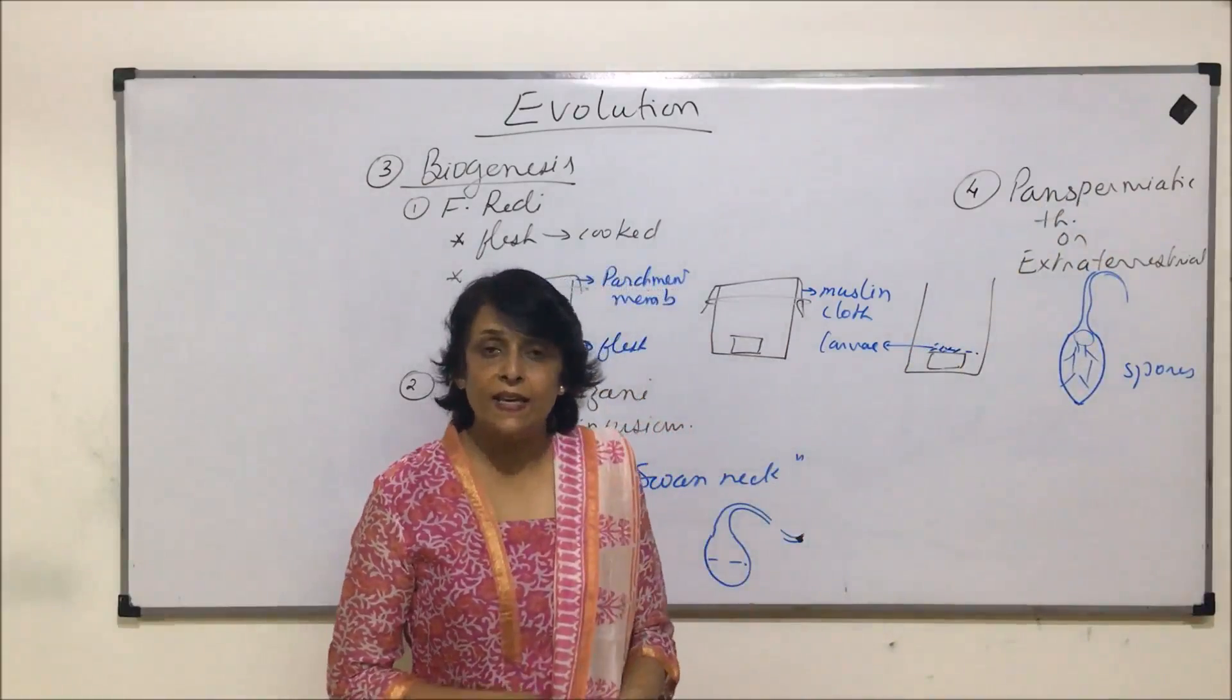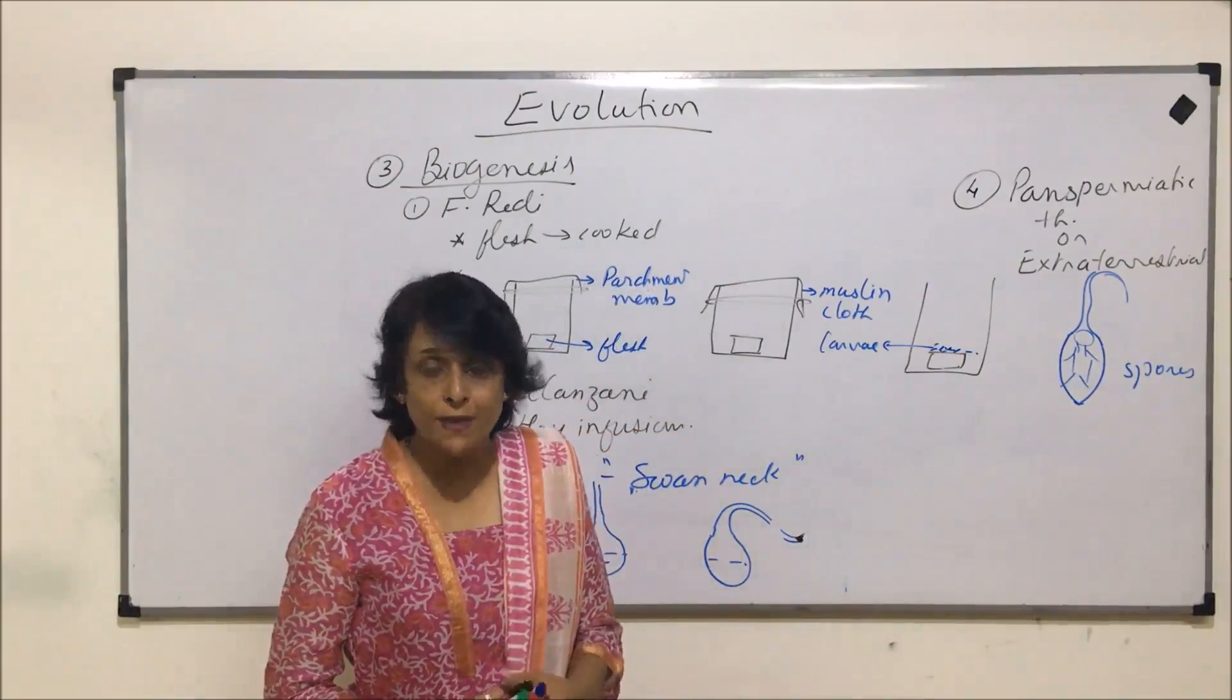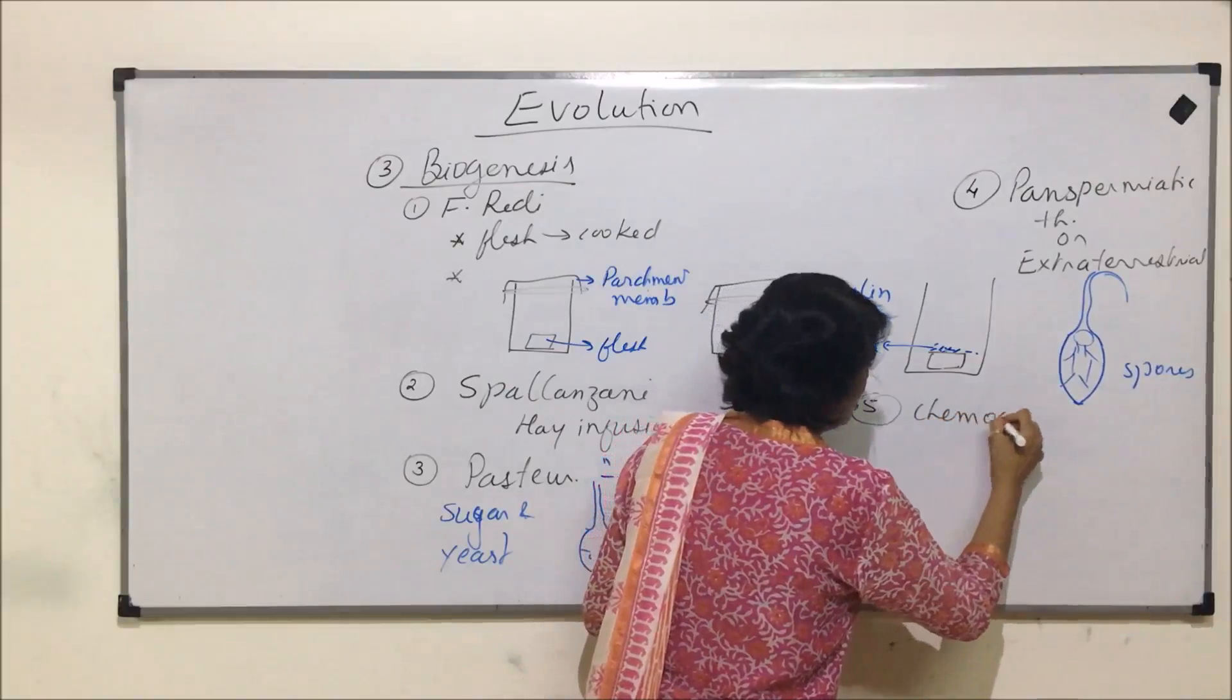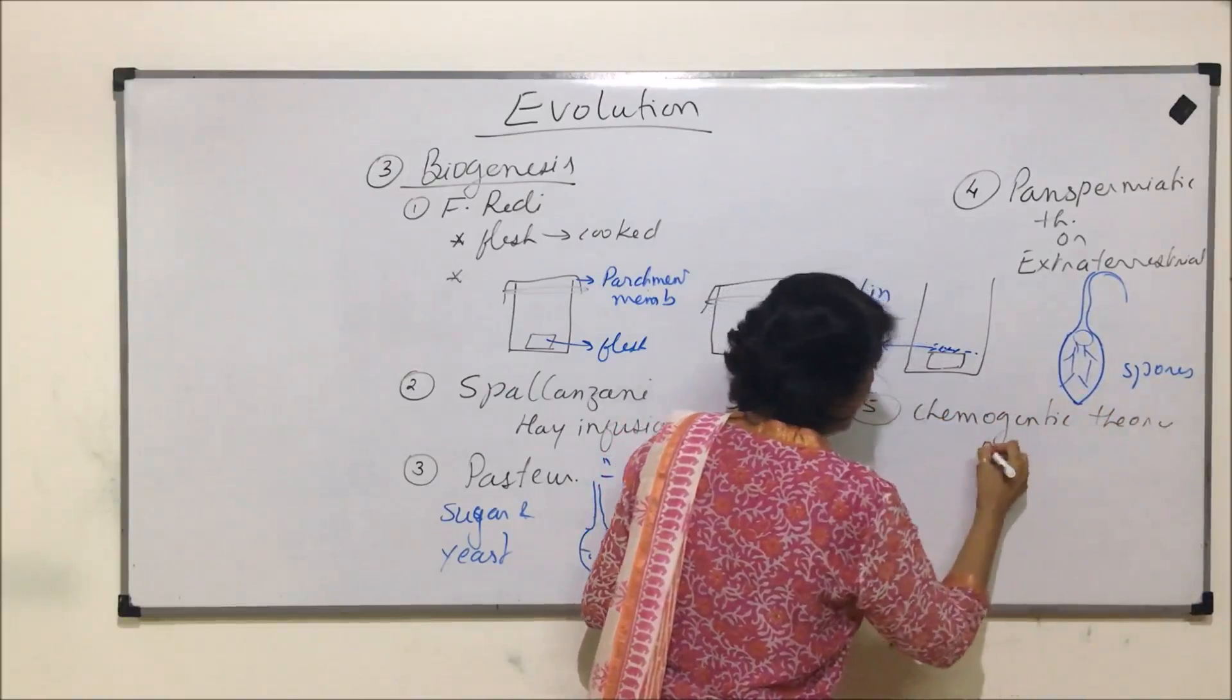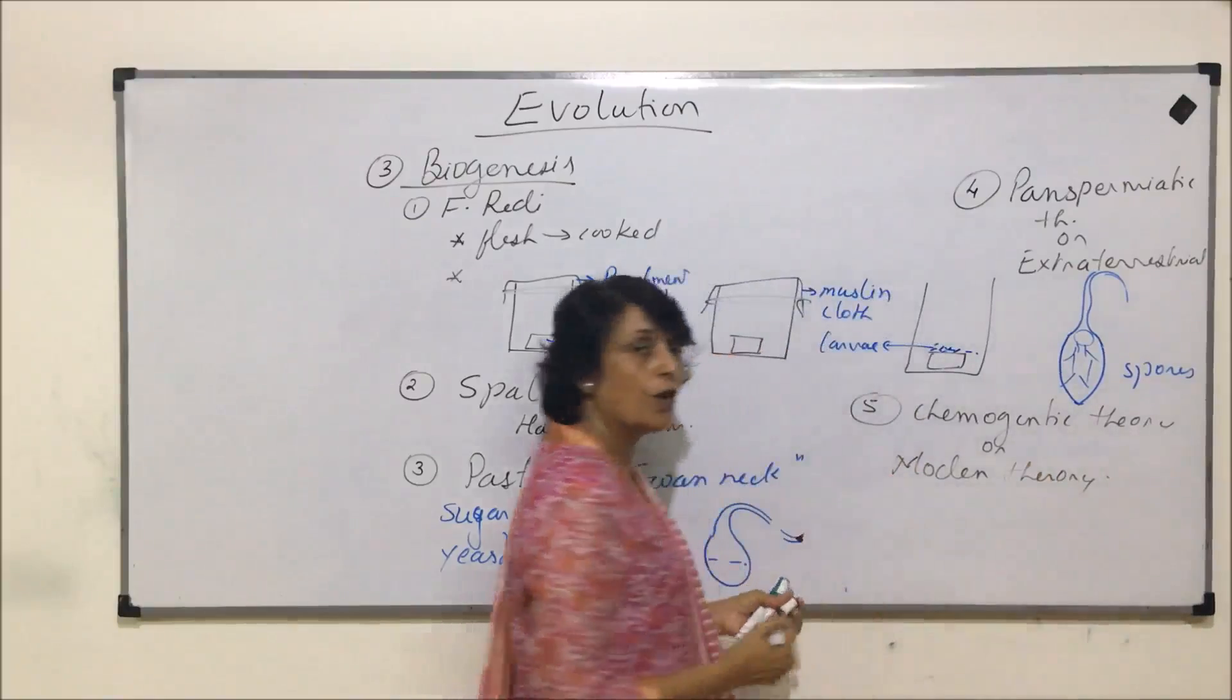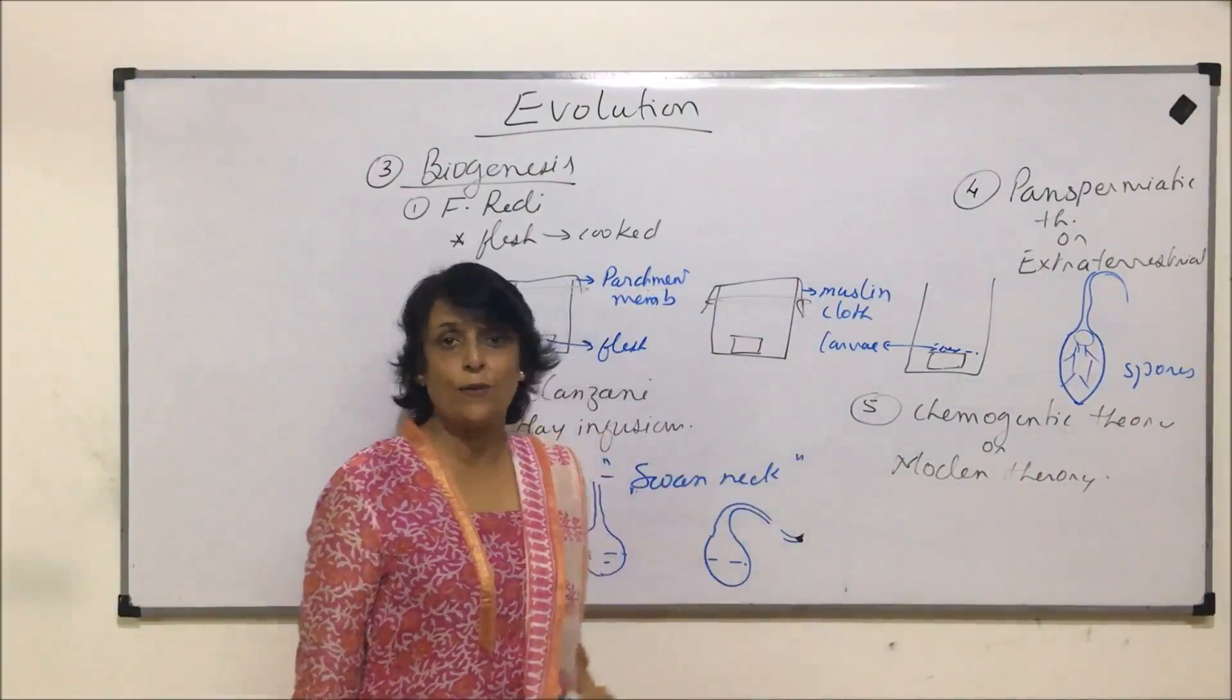The next theory, that is the modern theory. And modern theory is the one which is the most accepted one. And it is known as chemogenetic theory or it is also known as the modern theory of origin of life, and it is explained in three steps. So let us talk about this theory in detail now.